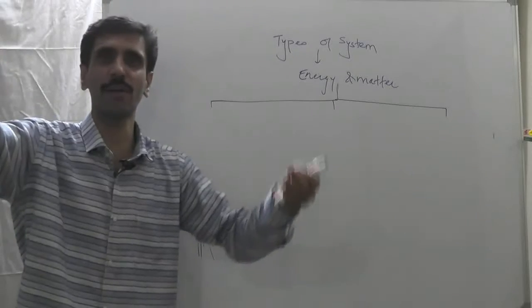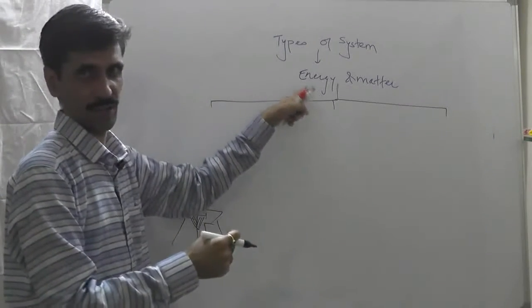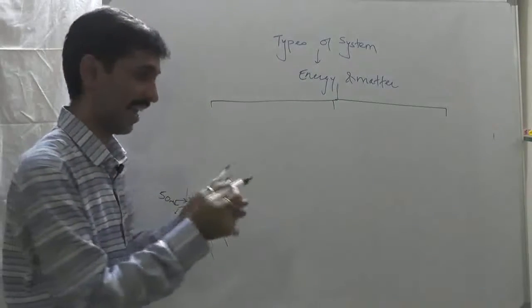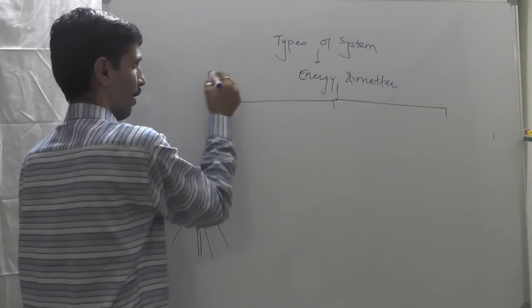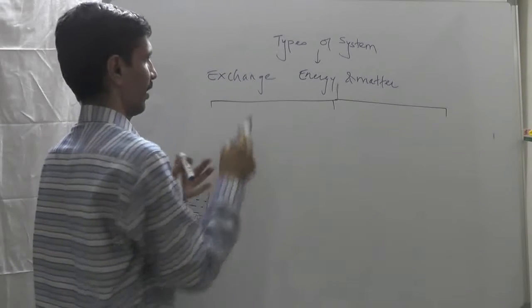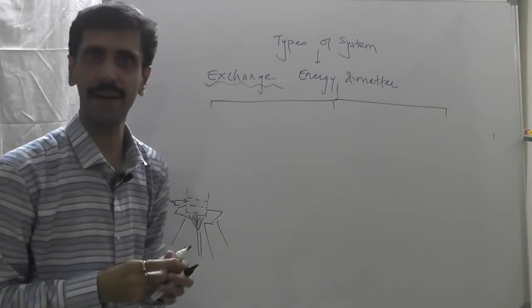Next thing is heat energy is going from system to surrounding in the form of energy. The matter is going from system to surrounding, so that means there is exchange. This entire classification is based on with respect to exchange. This is very important: exchange with respect to energy and matter.